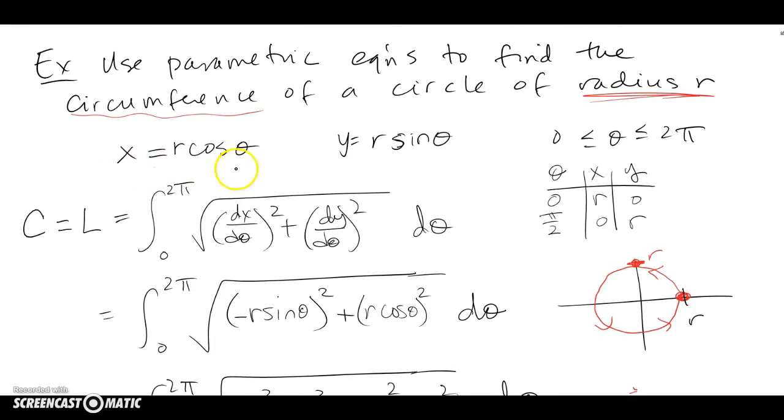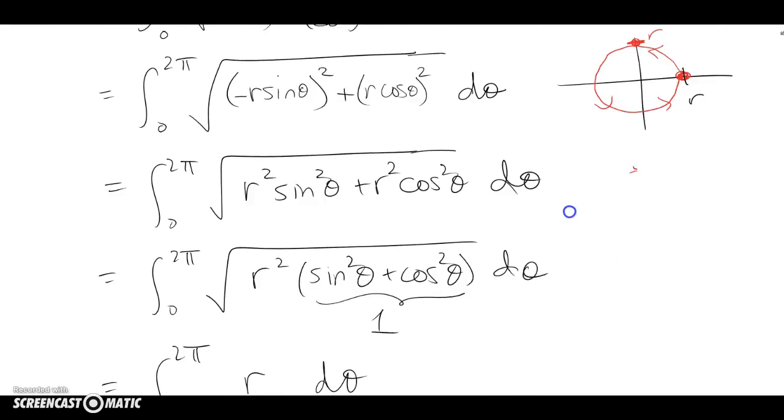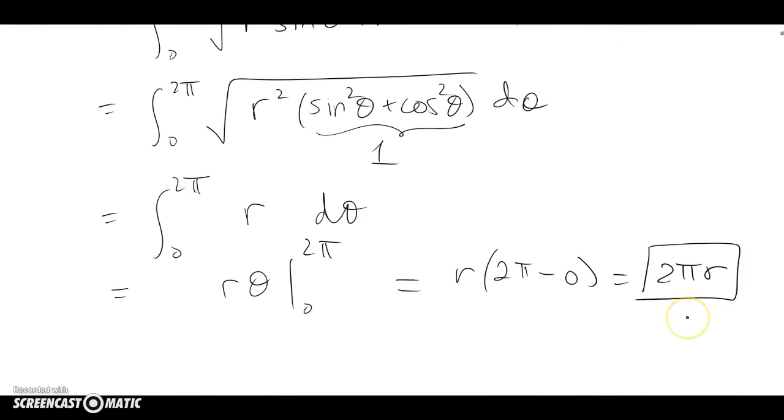So the key thing was to be able to parameterize the circle of radius r and then just use the arc length formula to end up with 2πr.